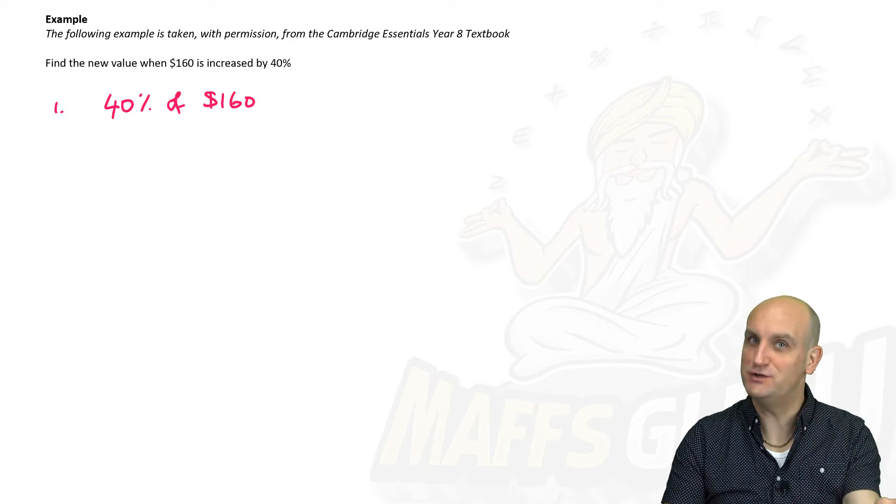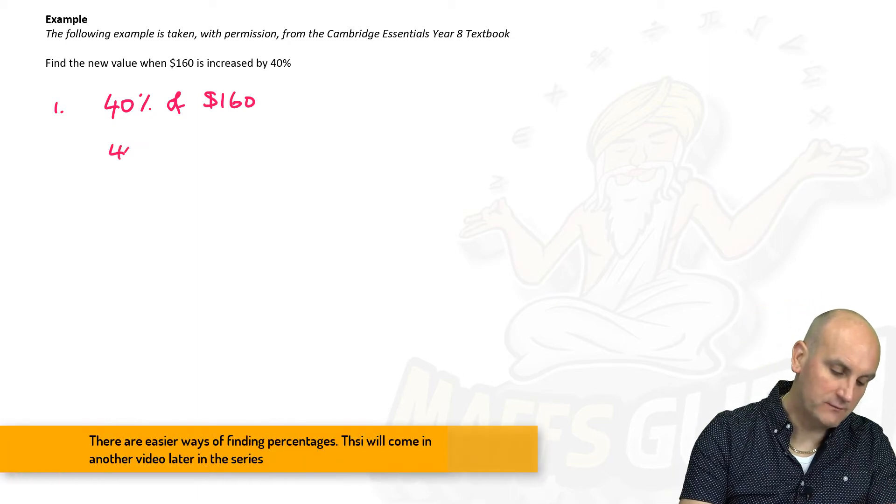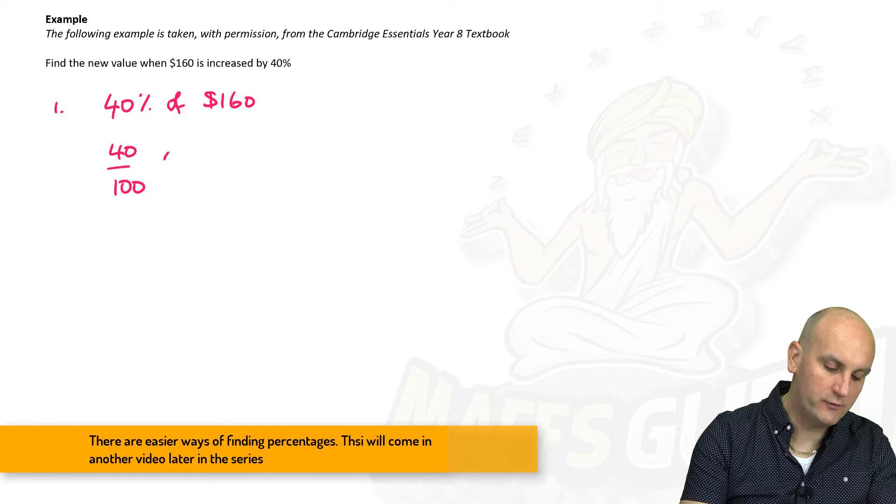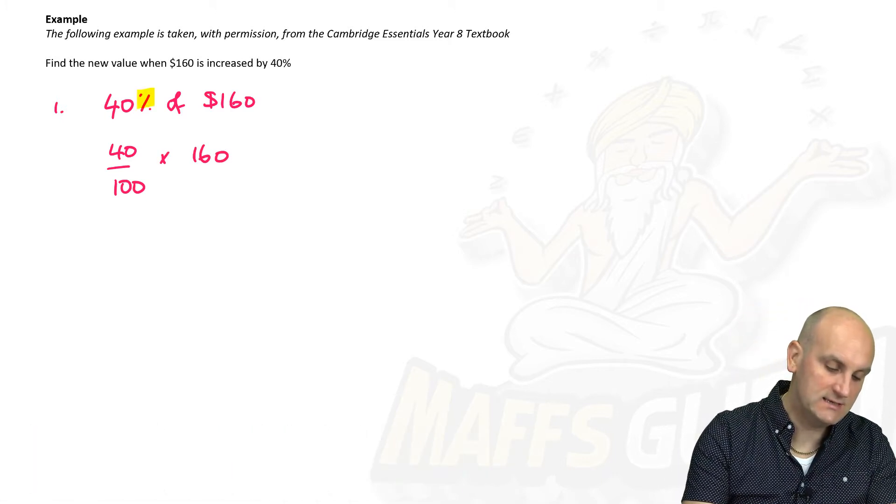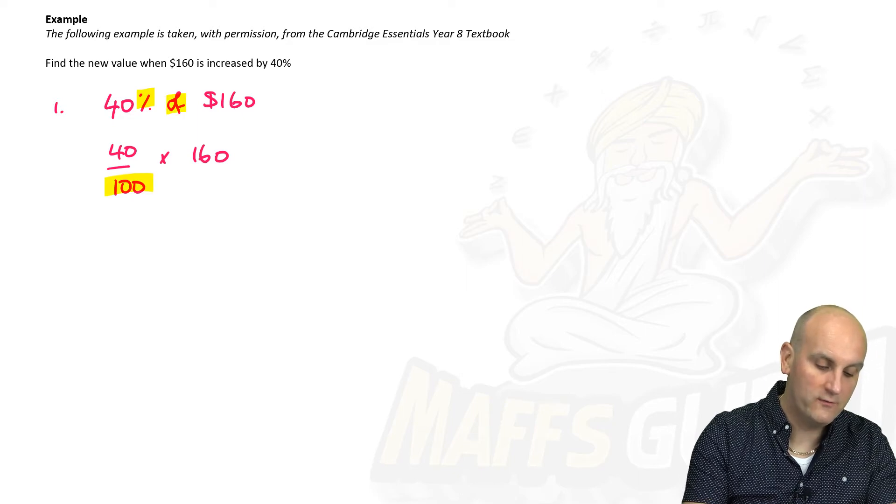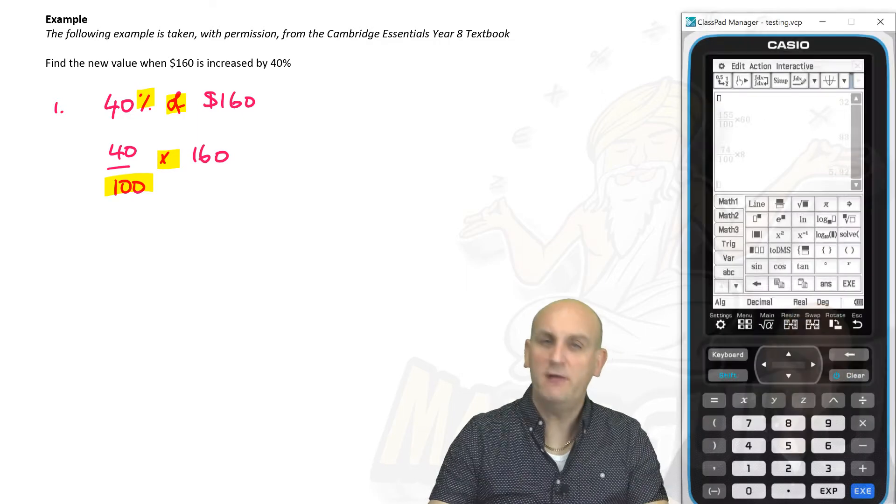So I want to find 40% of $160. In my previous video, I showed you how to do that. So that becomes 40 divided by 100 times 160. Percent divided by 100. So that percent sign is divided by 100. Of becomes times.